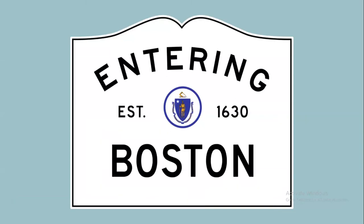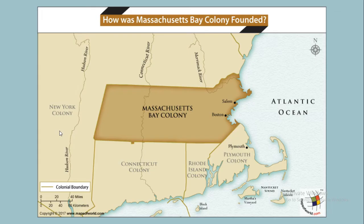For our second stop today, we are entering Boston, Massachusetts. In Boston, it is a harbor town, which you can see here means that it is on the water. A harbor is an area of water similar to a bay, like what we learned earlier this year. Boston is in the colony of Massachusetts. It is a major port city, meaning that there are lots of harbors and ports where boats come in and out to trade goods.